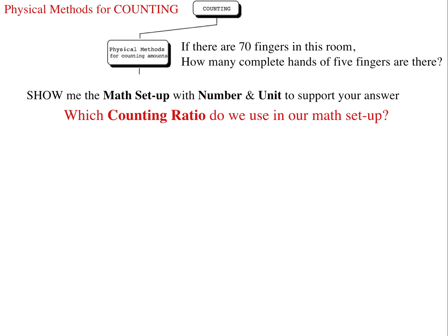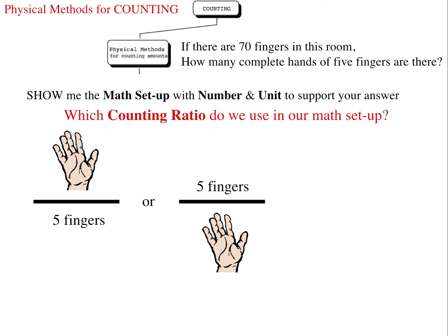Which counting ratio do we use in our math setup? One hand per five fingers or five fingers per one hand? We will use one hand per five fingers, since we're trying to determine how many hands there are in this room if there are 70 fingers.